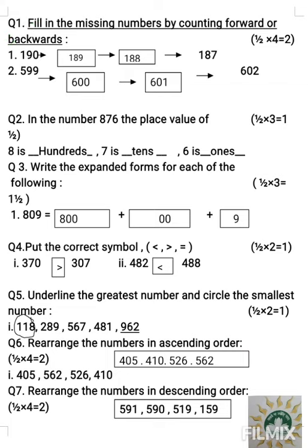Number one: fill in the missing numbers by counting forward or backward. The first number is given as 190 and the last number is given as 187. So first number is 190 and the last number is 187. The trick is whenever you have the smaller number at the end, that means we have to perform backward counting.